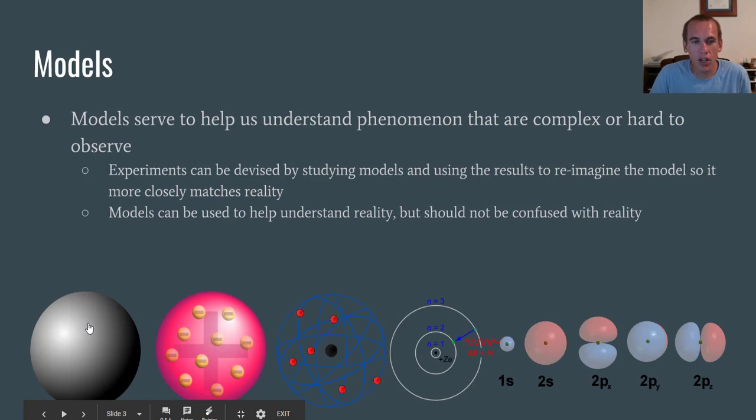This is a progression of atomic models. Now, models help us understand things that are not readily understood. So trying to understand how atoms are put together and what matter is made out of, that's taken a lot of progression over the years, starting all the way back with Dalton's model of the atom, which was a solid billiard ball model,